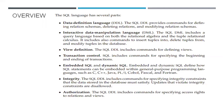Integrity — the SQL DDL includes commands for specifying integrity constraints that the data stored in the database must satisfy. Updates that violate integrity constraints are disallowed. For example, when accepting a mobile number, we must define the integrity rule that it must be a 10-digit number — a 9-digit or 11-digit entry must not be accepted.